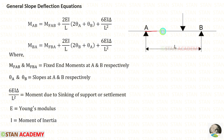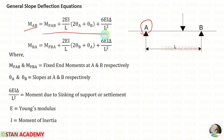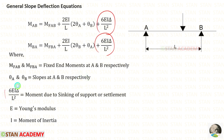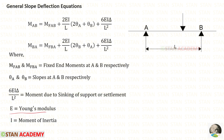Let us consider a span AB in a beam having the length of L. At point A there will be a moment MAB — this is the equation to find that — and at point B there will be a moment MBA, and this is the equation to find that. MAB and MBA are the fixed end moments at A and B respectively. Theta A and theta B are the slopes at A and B respectively. 6EI·delta upon L² is the moment due to sinking of support or settlement. E is Young's modulus and I is the moment of inertia. Using these two equations we are going to derive the stiffness matrix.